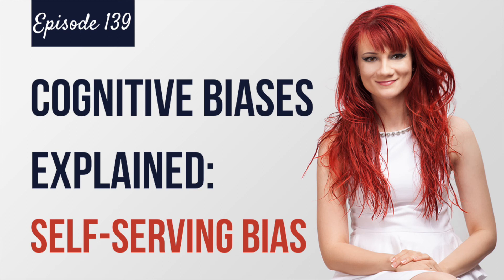Here are some more examples of this cognitive bias. Let's say you take credit for a group project that you've been working on with several other people — that means you're attributing the success to your own individual characteristics. Another example: let's say your group project fails, but you don't take responsibility and instead blame your colleagues for the outcome, thinking it's entirely their fault. Before coming to any conclusions, it's beneficial to step back and assess the situation objectively.